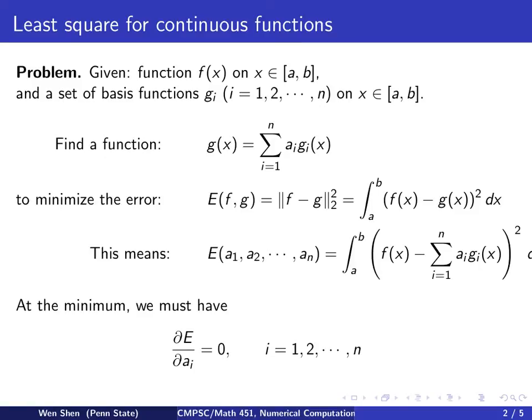We first notice that the error function actually is a function of those coefficients a_i's, because after we plug in the expression for g, we see g equals to the sum over a_i and g_i. On the whole right-hand side, f is given, all the g_i's are given, the a_i's are the ones we need to find, and the error depends on our choices of these a_i's.